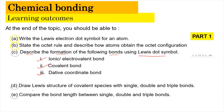Next, we're going to learn how to draw the Lewis structure of covalent species with a single, double, or triple bond. Last but not least, we're going to compare the bond length as well as the bond strength between the single, double, and triple bond. So the learning outcomes C, D, and E will be covered in part 2 of the video, which is this video. So without further ado, let us start.